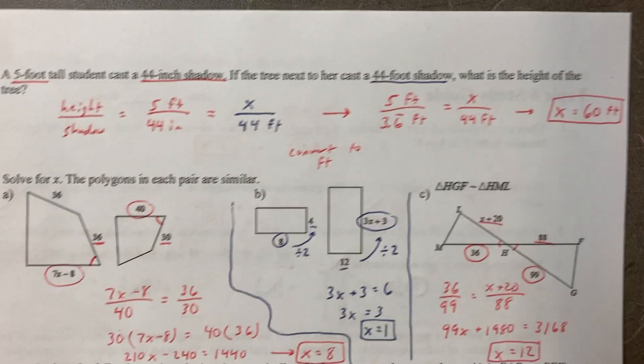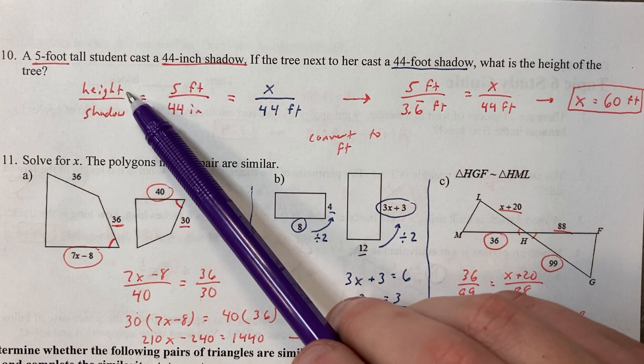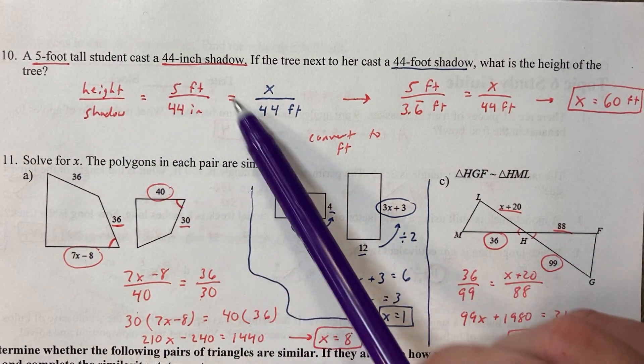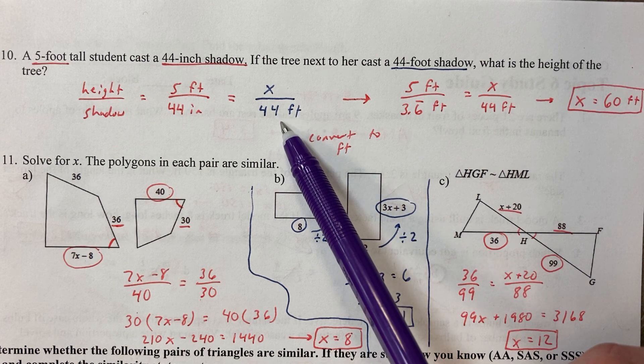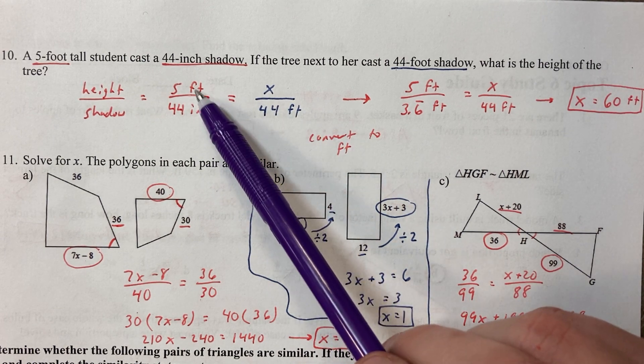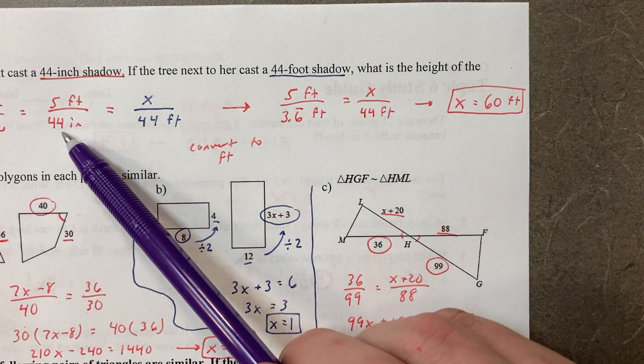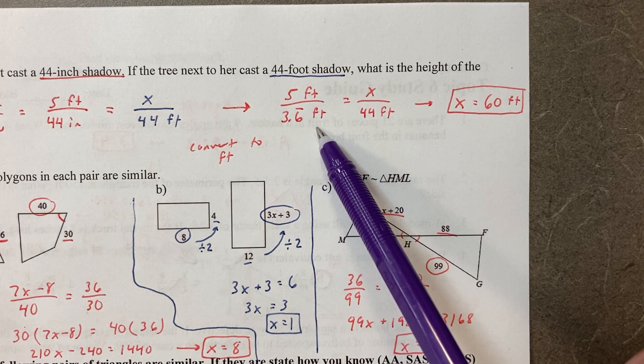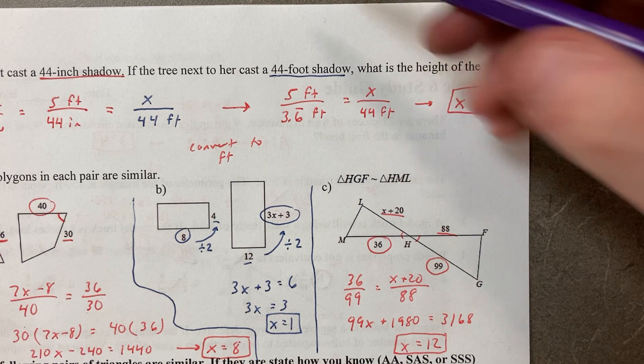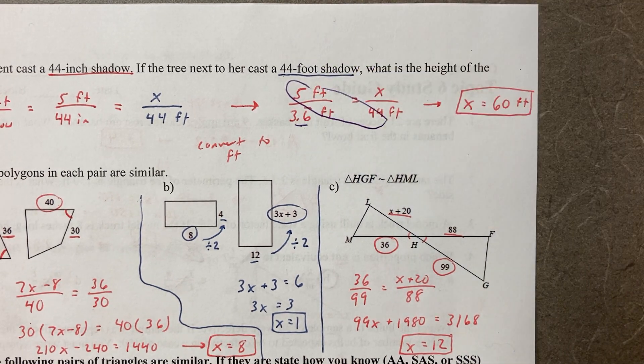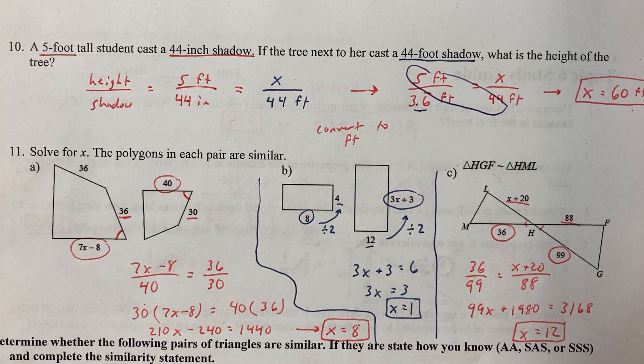Number 10. You could set up a nice picture for this, but you don't have to. As long as you establish a ratio. I'm establishing height to shadow. 5 foot height, 44 inch shadow. X height, 44 foot shadow. Now that is a problem. I'm going to convert this. Instead of doing 5 to 44 inches, I'm going to do 5 to 3.6 feet. How do you convert to feet? You divide by 12. Now, I'm going to cross multiply and divide. It's 60 feet. If you didn't change that, you would get something just ridiculous.